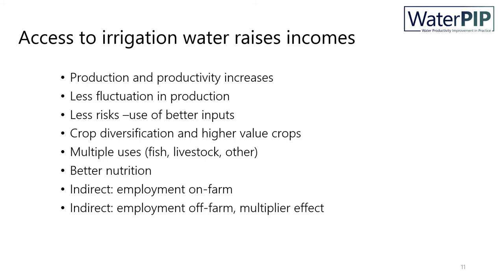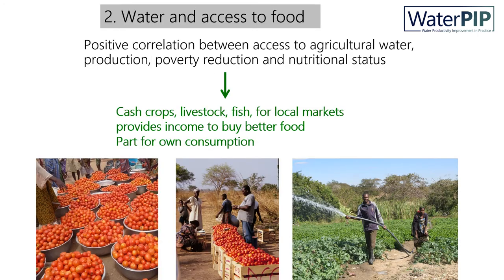There are also two indirect effects. It leads to more employment on-farm, so more possibilities to earn an income for farm workers. But it also quite often leads to more employment off-farm, because farm workers are attracted to the area. That may lead to demand for housing, restaurants, shops, and transportation services. This is quite often called the multiplier effect, which could be quite strong. Therefore, there is a positive correlation between access to agricultural water, production, poverty reduction, and nutritional status. Cash crops, livestock, and fish for local markets provide income to buy better food, and part of the production by farmers is also used for own consumption.